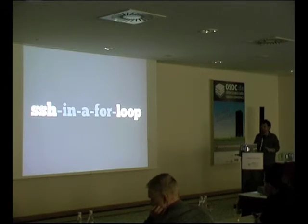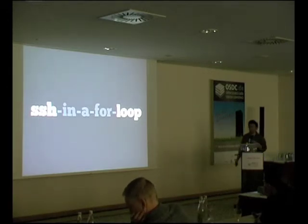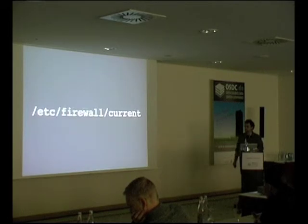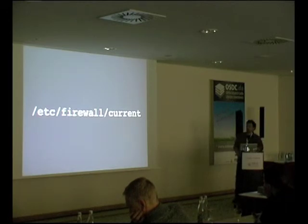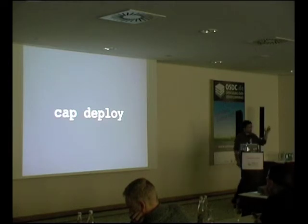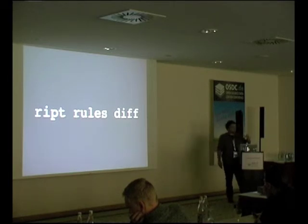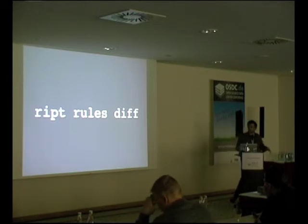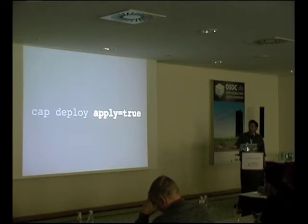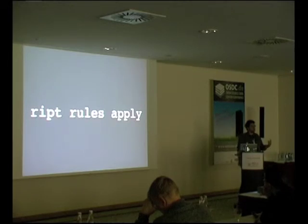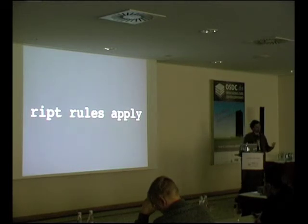We use Capistrano — basically SSH in a for loop, very popular in the Ruby community for deploying web applications — to deploy those firewall rules into /etc/firewall/current. When you do a cap deploy of the new rules, it runs a ripped rules diff but doesn't apply anything. If you run cap deploy with apply equals true, it does ripped rules apply and then ripped clean apply — that's how you chain those commands together.